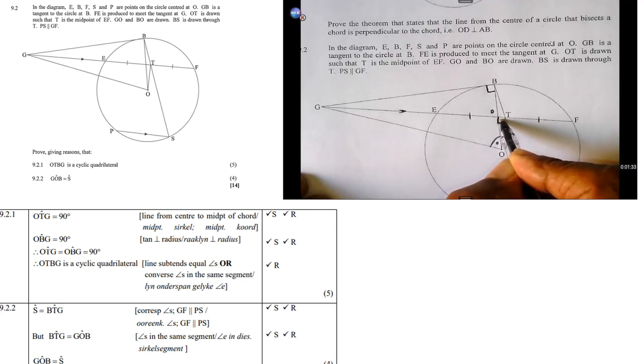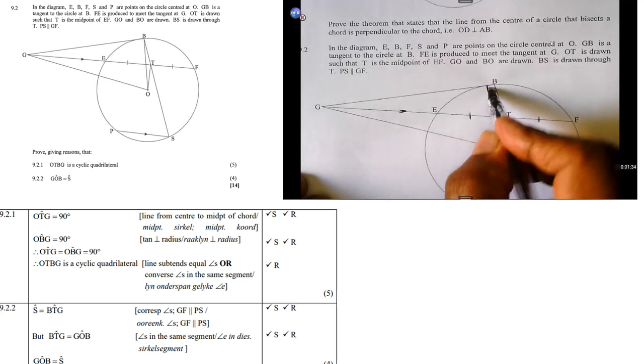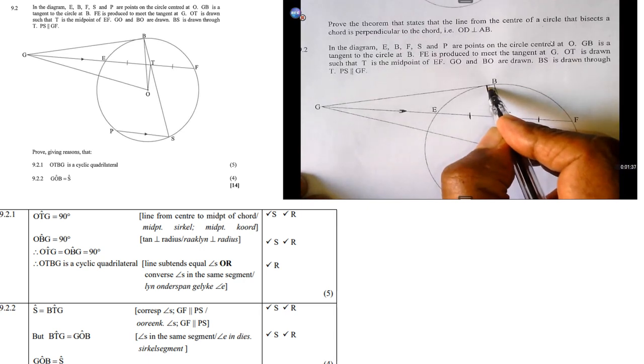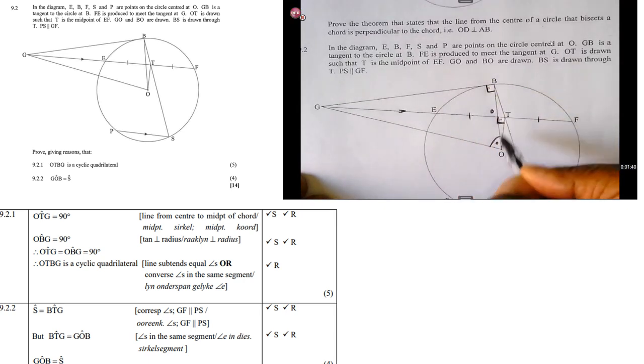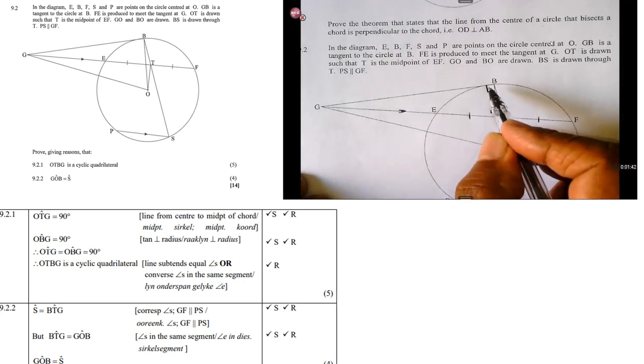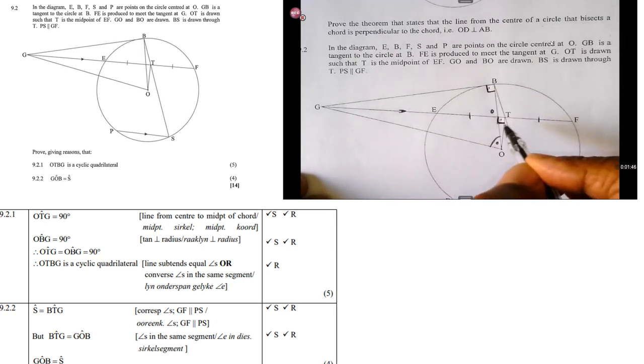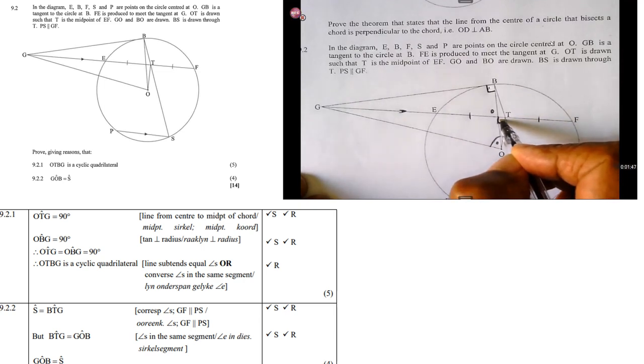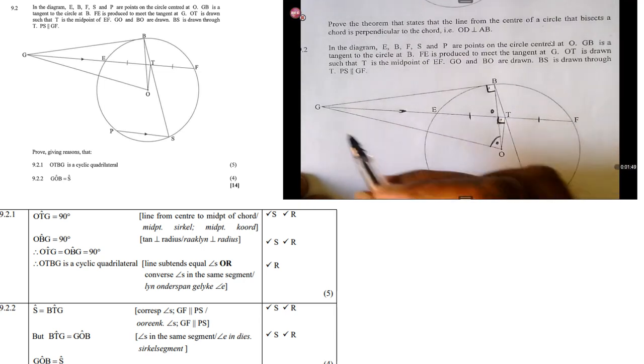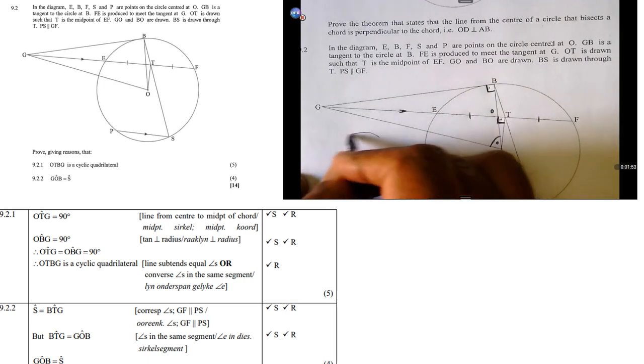Then, we also have OBG, this angle here, also 90. Why? Angle between the tangent and the radius. Angle between the tangent and the radius is 90. So, therefore, this angle here and this angle here are equal. Now, take note if they're equal.